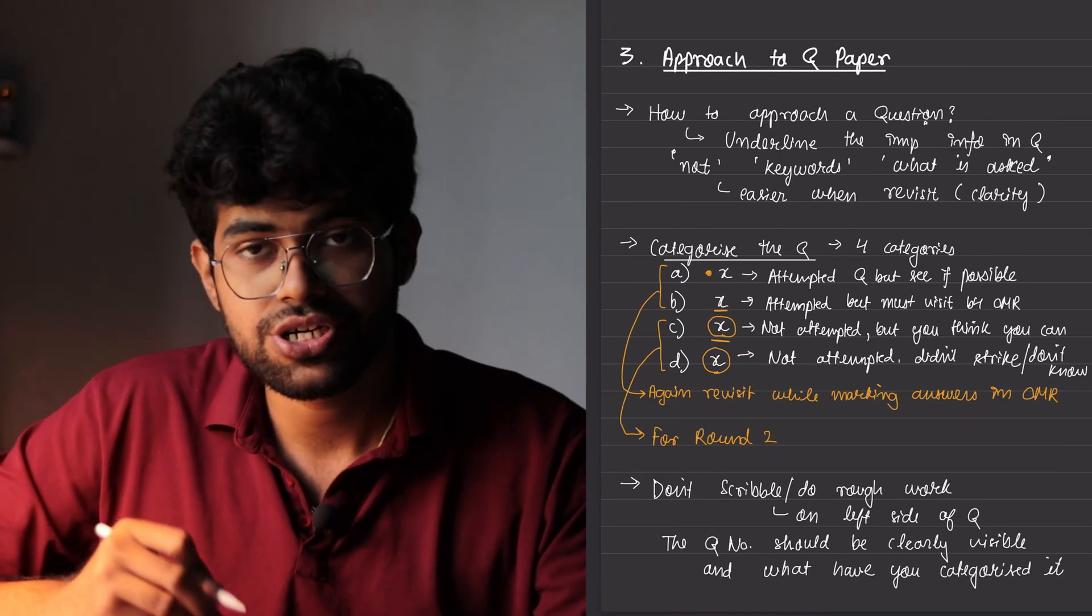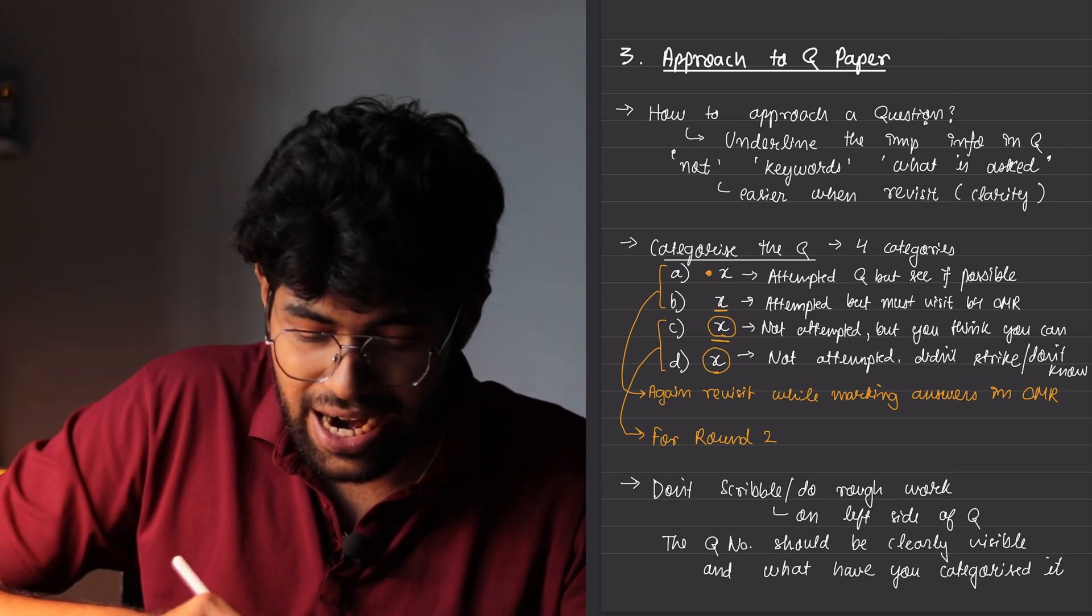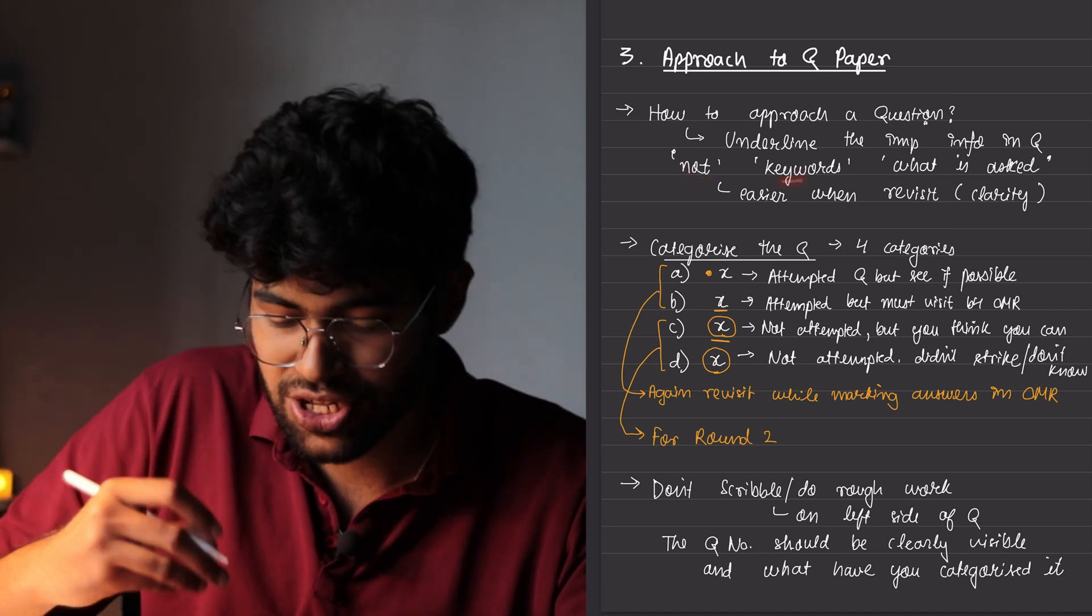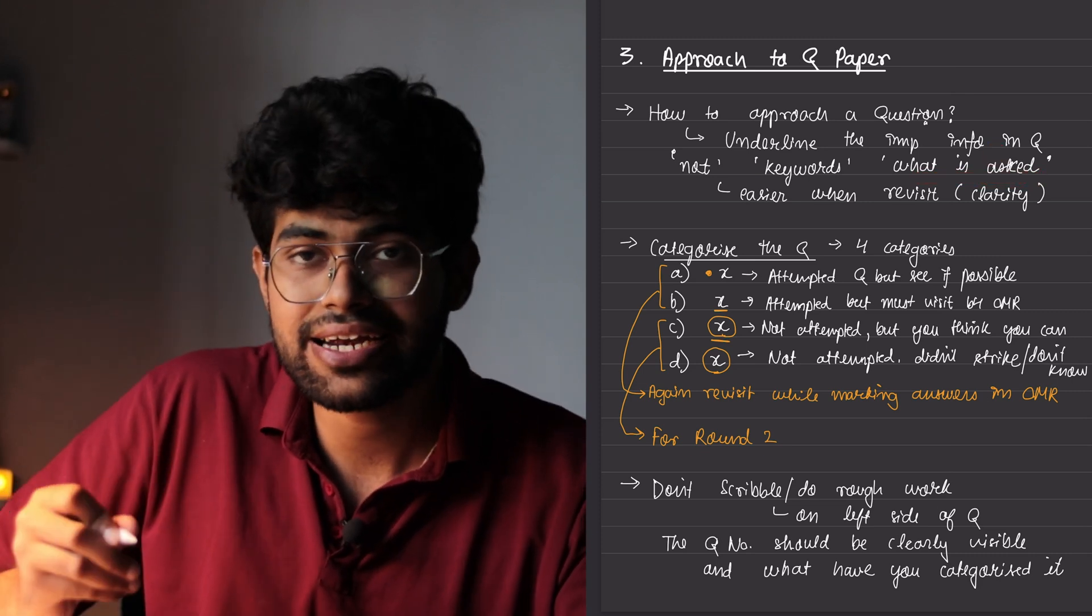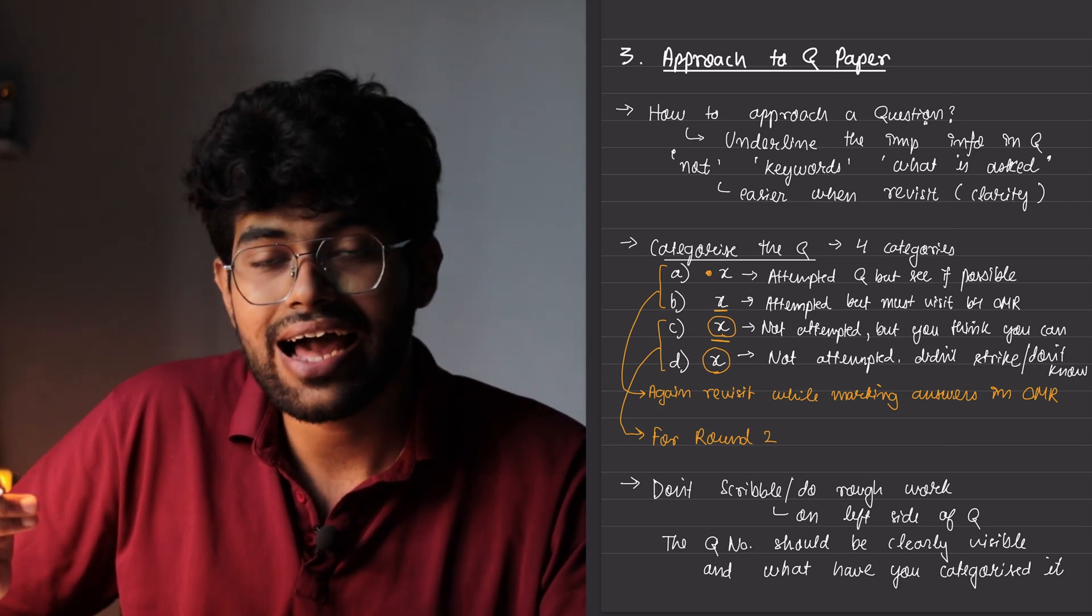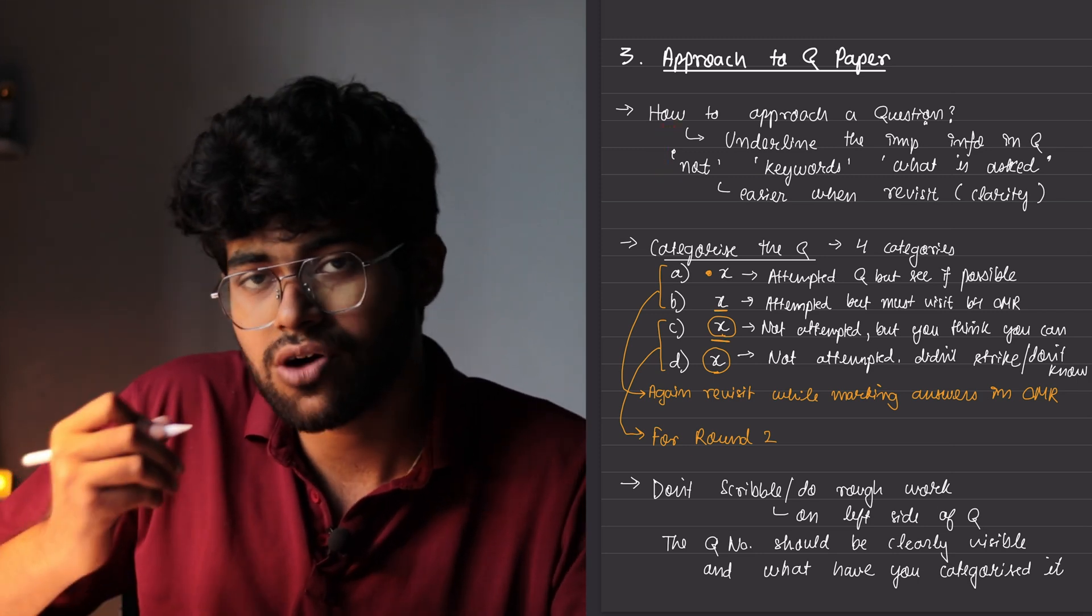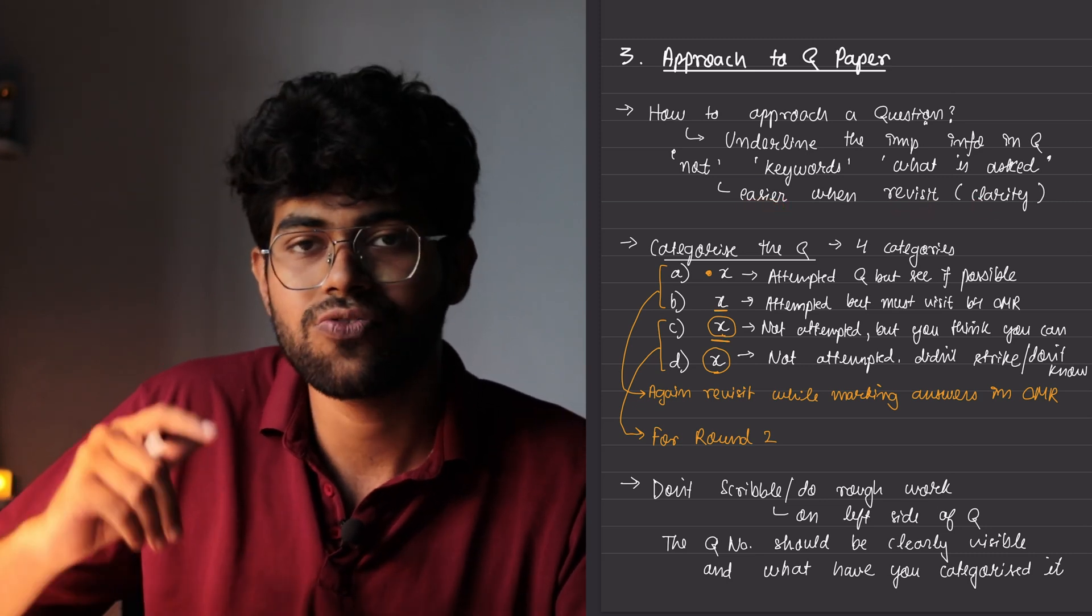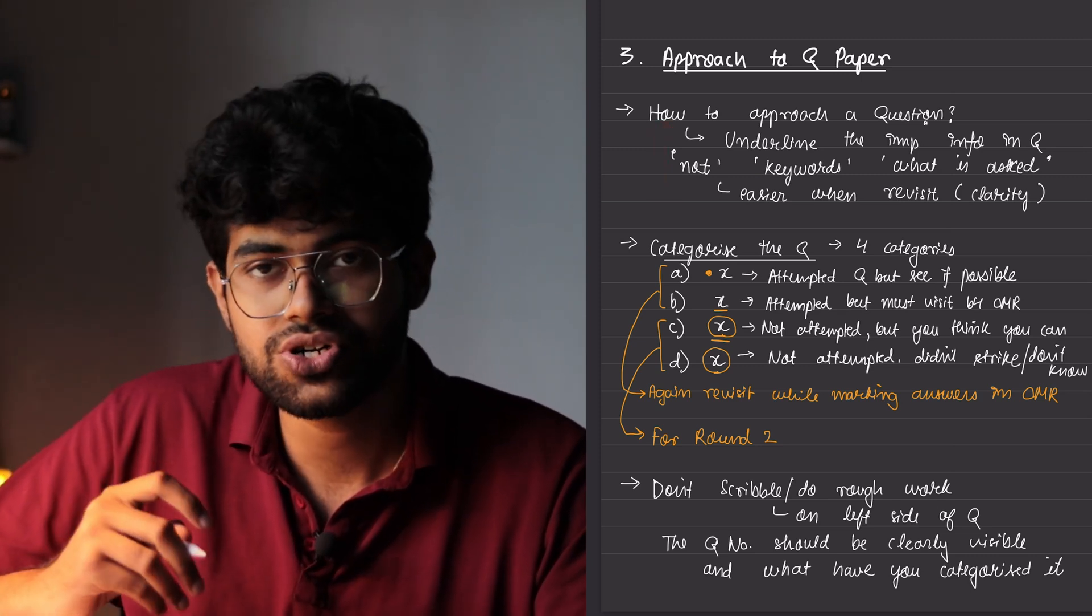Now coming to how you should approach your question paper. So when you read a question, the way you should approach is first basically underline the important information in the questions that is the words such as not, the keywords that are mentioned in the questions and what is asked. This is the most important thing because in that time with all those pressure and anxiety, you often forget what is asked in the questions. And that is the reason why you start doing silly mistakes. So by doing this, even if you are not able to solve these questions right then, it is easier for you to revisit them later because you will now be having the clarity of what is asked, right? After reading the questions, if you are able to solve it or if you are not, you should categorize the questions.